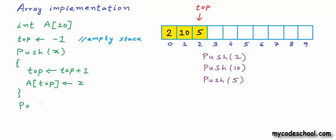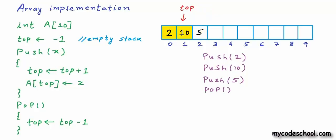To pop an element from the stack, all we need to do is decrement top by one. For example, calling pop simply decrements top. Cells highlighted in the figure represent the current stack — we do not need to reset popped values since we don't care about garbage in cells outside the stack. Next time we push, we overwrite them anyway. So after a pop, pushing 7 increments top again and overwrites index 2 with the value 7.